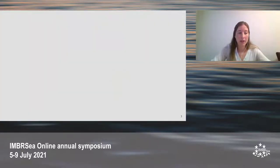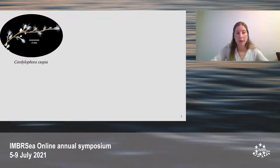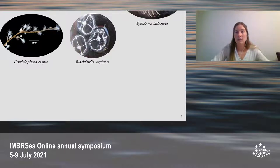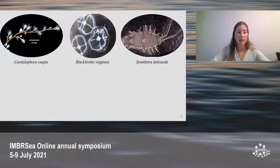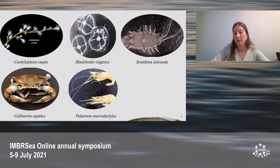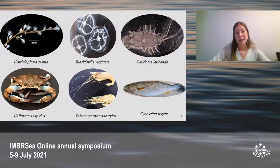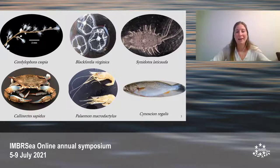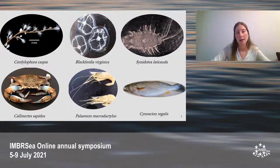The non-indigenous species found in the Guadiana estuary are: the freshwater hydroid Cordylophora caspia, the Black Sea jellyfish Blackfordia virginica, the isopod Synidotea alaticauda, the Atlantic blue crab Callinectes sapidus, the oriental shrimp Palaemon macrodactylus, and the weakfish Cynoscion regalis. Some common names already indicate that the Guadiana estuary is not among their native ranges, for example the oriental shrimp Palaemon macrodactylus. It is really important to understand the feeding methods and the prey and predators they have in order to see how they can affect the ecosystem.